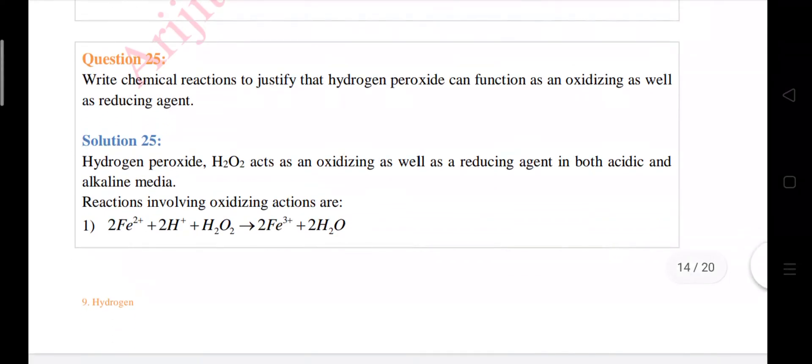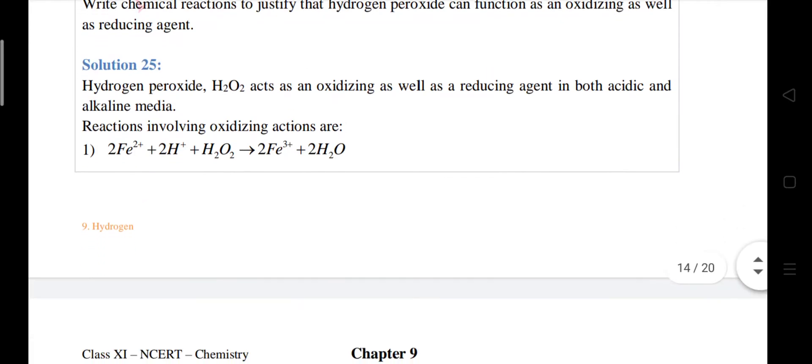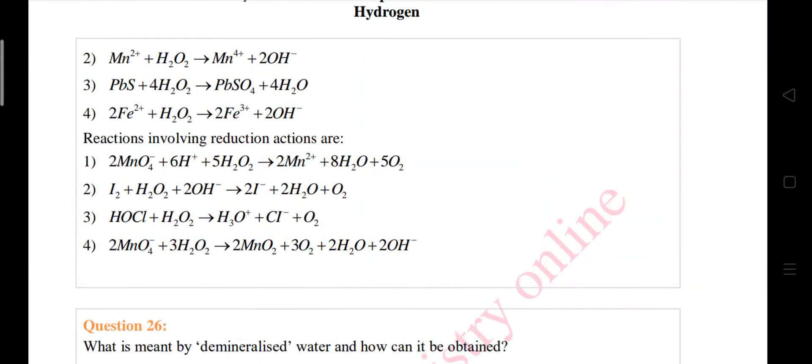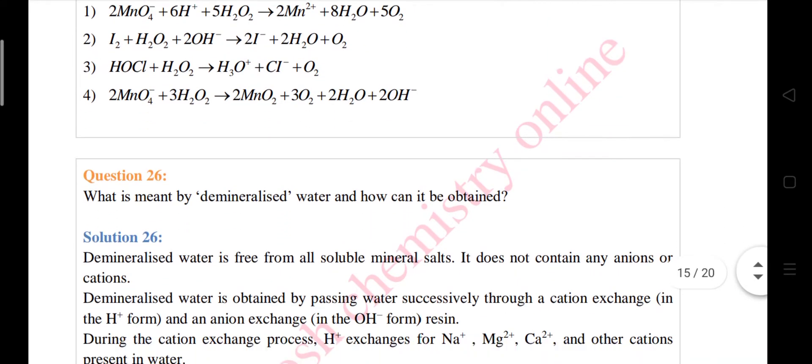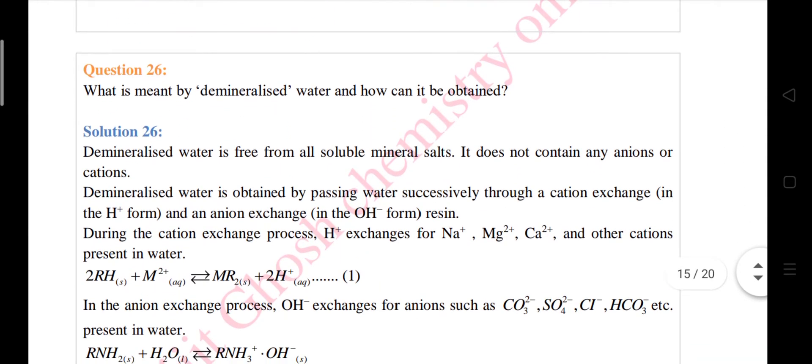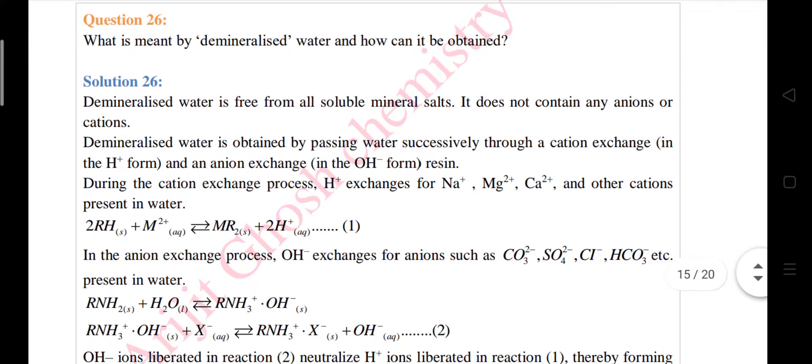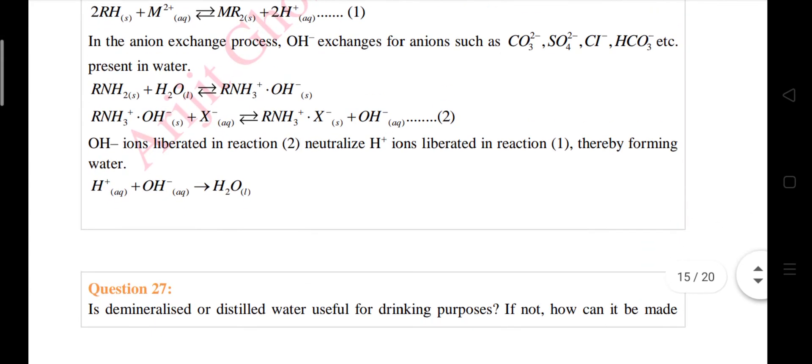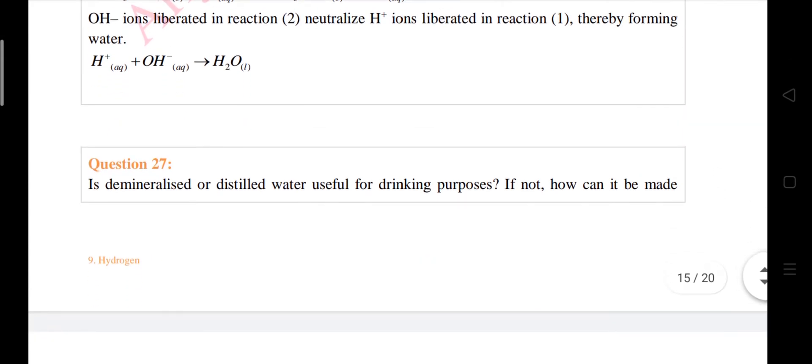Next, question number 25: Write the chemical reactions to justify that hydrogen peroxide can function as an oxidizing as well as reducing agent. Then question number 26: What is meant by demineralized water and how can it be obtained? Demineralized means no minerals will be there, that is no cations or anions except H plus and OH minus. Next is question number 27.